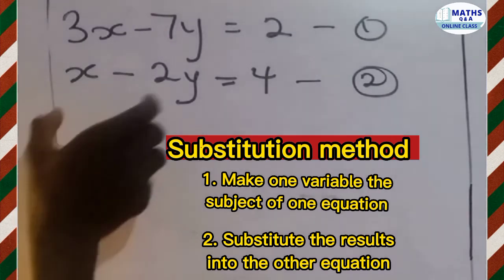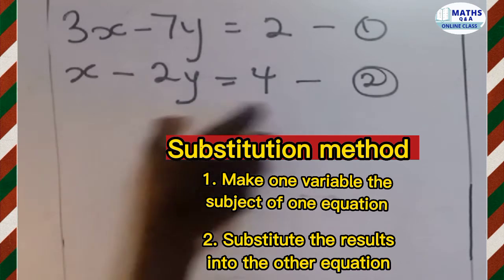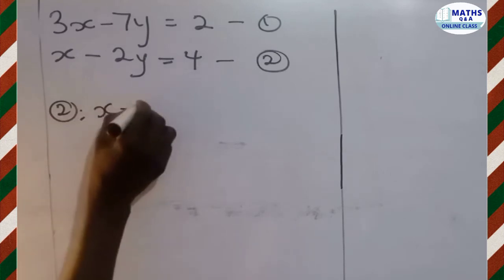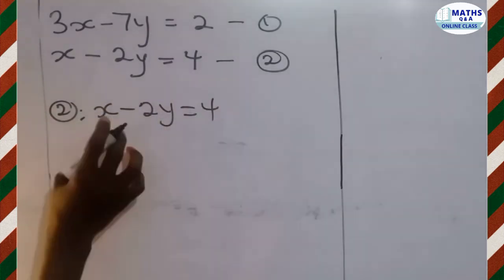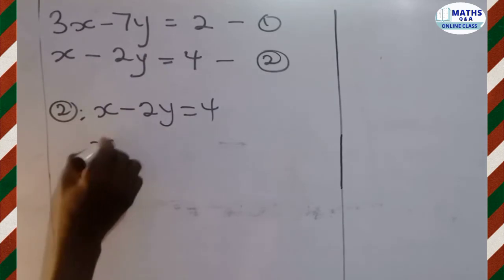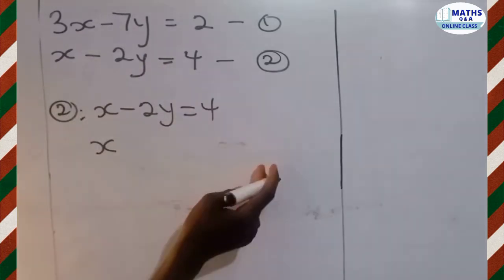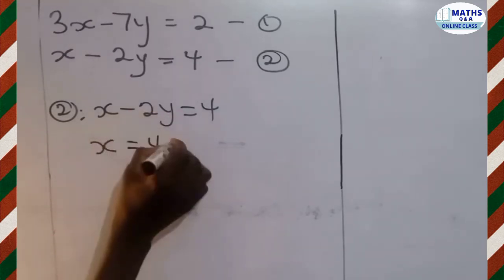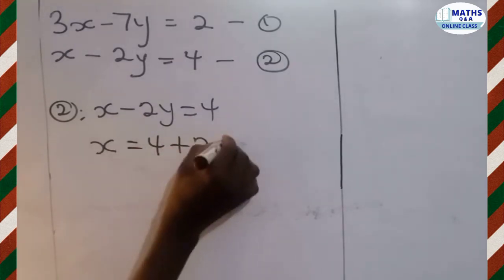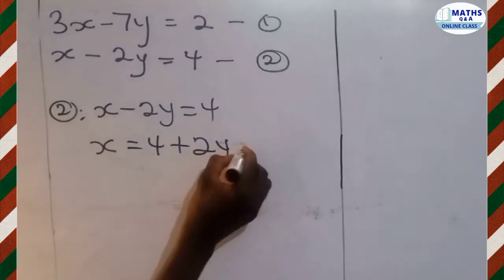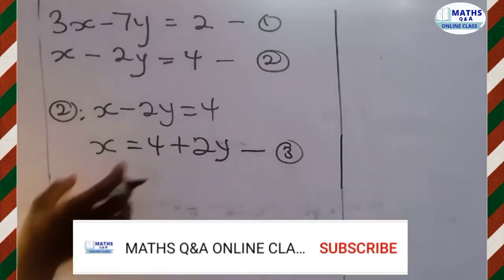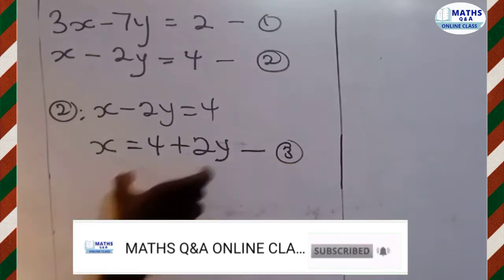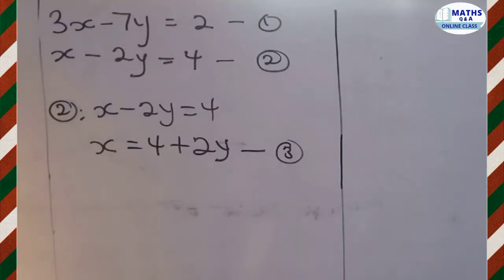Let's make x the subject of equation 2. Taking equation 2: x minus 2y equals 4. We maintain x and move negative 2y to the other side, giving x equals 4 plus 2y. We call this equation 3. Now we've made x the subject and can substitute into equation 1.